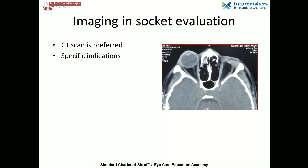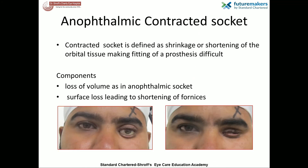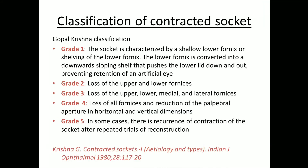With this knowledge in mind, we go on to the examination of a very commonly encountered entity — the contracted socket. Contracted socket is defined as shrinkage or shortening of the orbital tissues making fitting of a prosthesis difficult. It can have both surface as well as volume deficiency components. The most widely used classification for contracted socket — the Gopal Krishna classification — mainly focuses on the surface component.